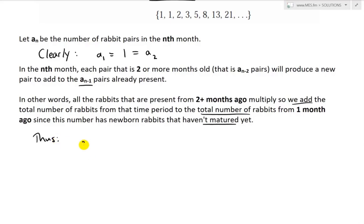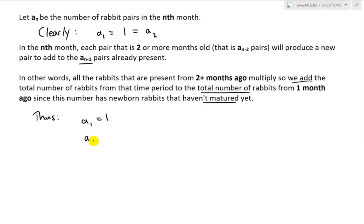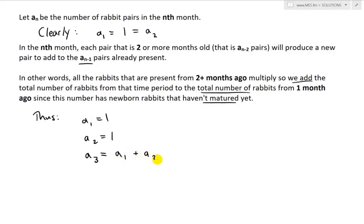So we have A_1 equals 1 and A_2 equals 1 because we still have one pair. Now for A_3, the total in the third month: the pair from month 2 has now matured, so it reproduces. We take A_2 plus A_1. The pair in month 2 was 1, and they produce 1 more, so A_3 equals 1 plus 1 equals 2.